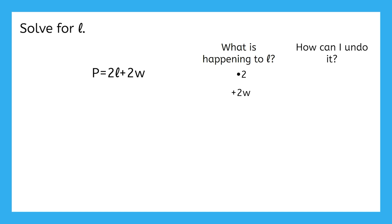So to isolate L, we're going to undo those operations with their opposites in the reverse order. Starting with subtracting 2W from both sides and then dividing both sides by 2. Pause the video here and give this a try on your own.